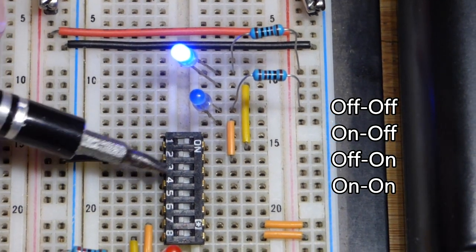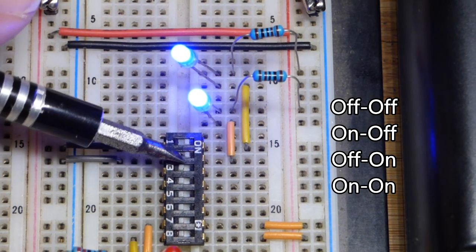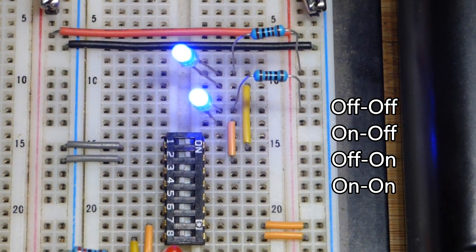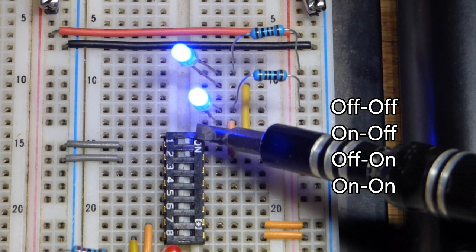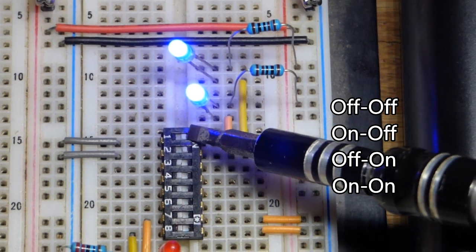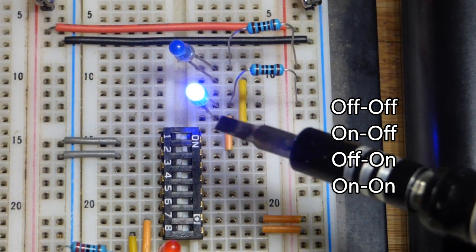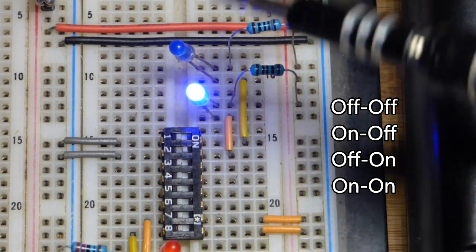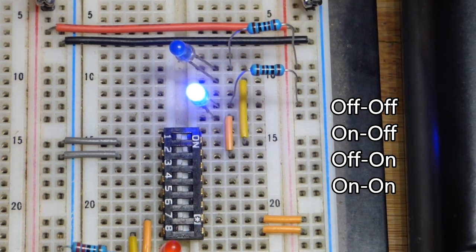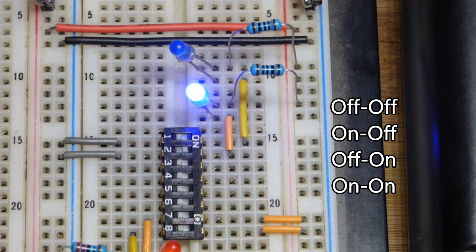We can turn the other one on if we want, or we could have them both off at one time. The top one was on, and now the bottom one is on. Previously we had both of them on, so we had four options that we could set there. Until we switch it again, it's going to remain in that state.